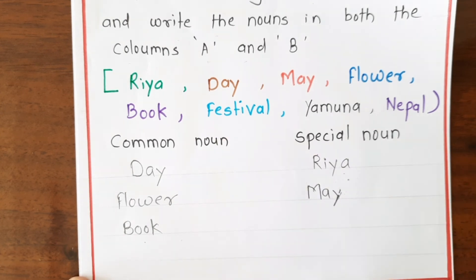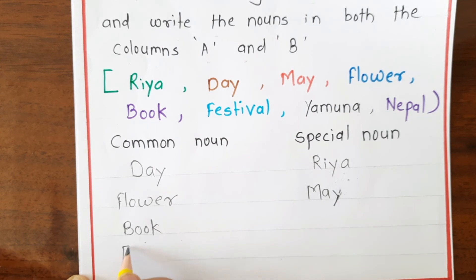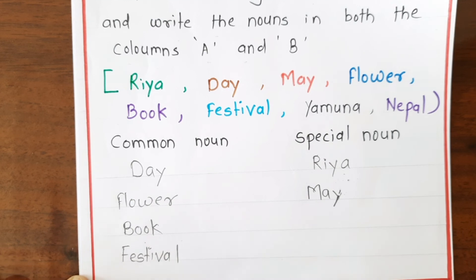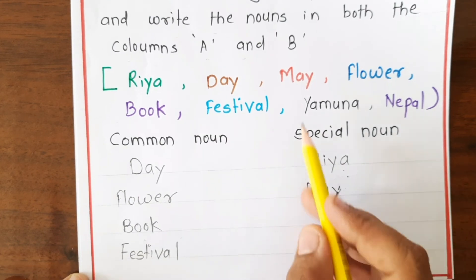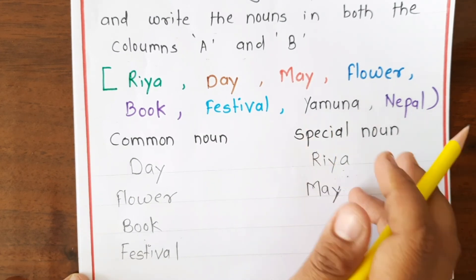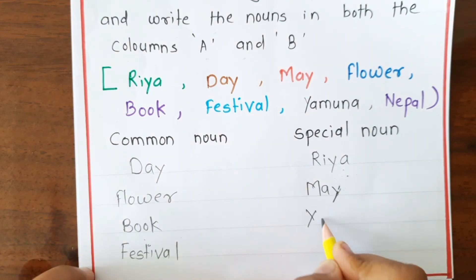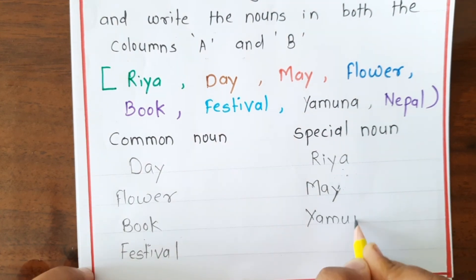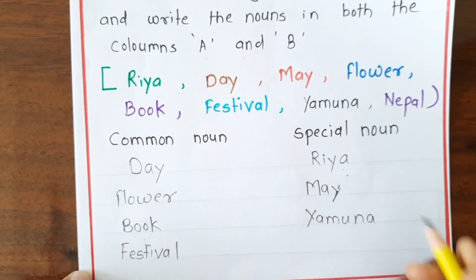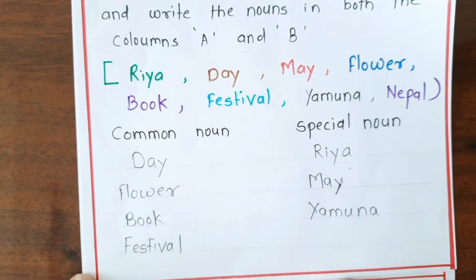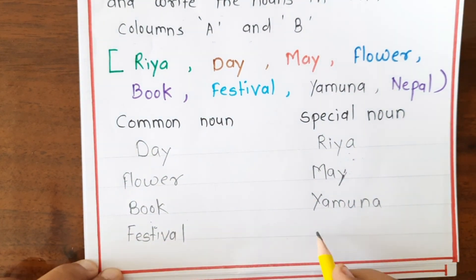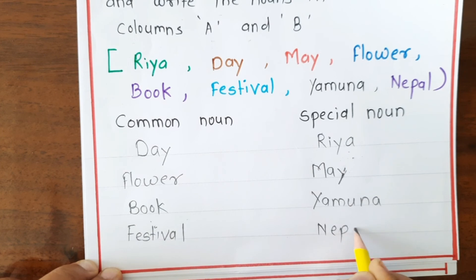Next, 'festival' — like Diwali or Holi, the word 'festival' by itself is a common noun. Next, 'Yamuna' — Yamuna is a particular name, so it is a proper noun. Next, 'Nepal' — Nepal is a particular country, so it is a proper noun.